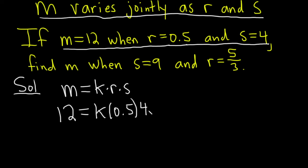4 times 0.5 is the same thing as 4 times 1 half, so that's 2. This is 2k and this is 12. Then we divide both sides by 2, and so we get k equals 6.